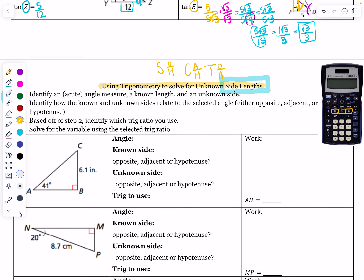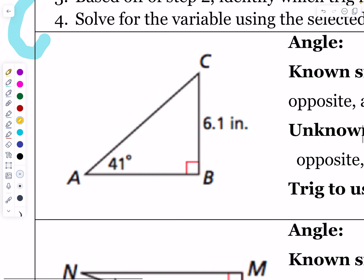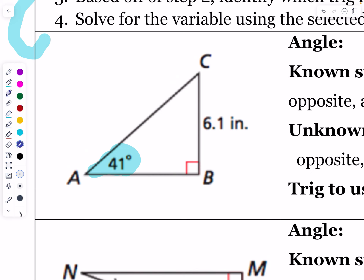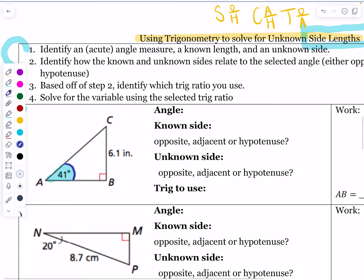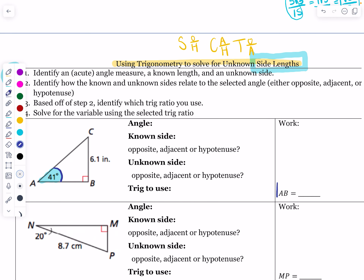I'm going to zoom into this first picture — a right triangle with a 90-degree angle and an angle already labeled 41 degrees. I always use the angle that's already there. That 41-degree marking kind of looks like an eyeball, so I draw what I call an eyelid to look at the triangle through the perspective of 41 degrees. We're ultimately trying to find the length of AB, so I'm going to put an X there.